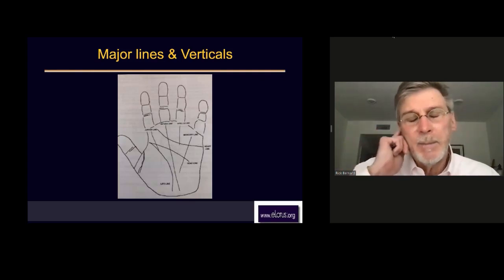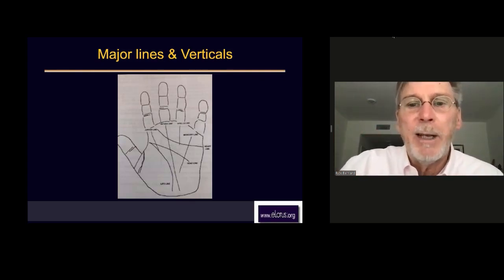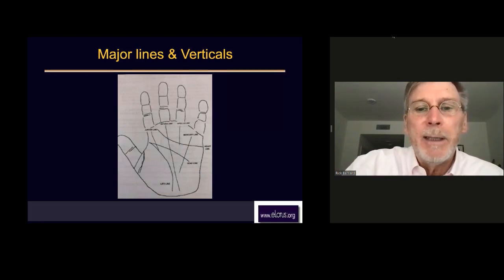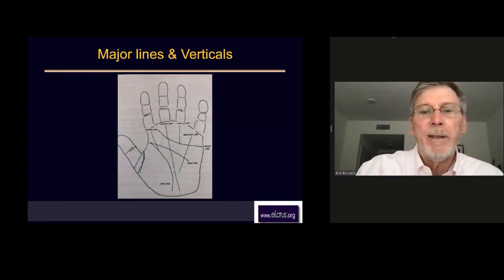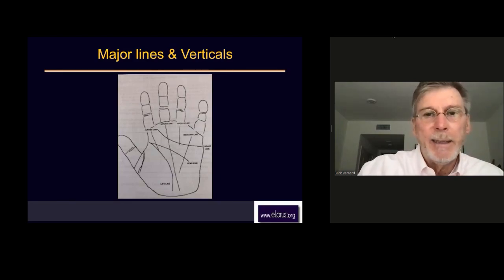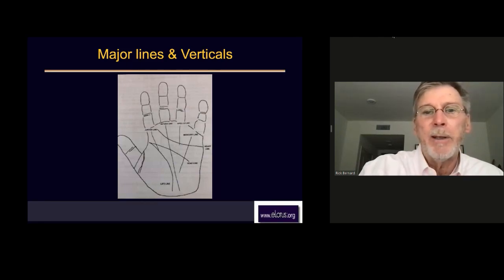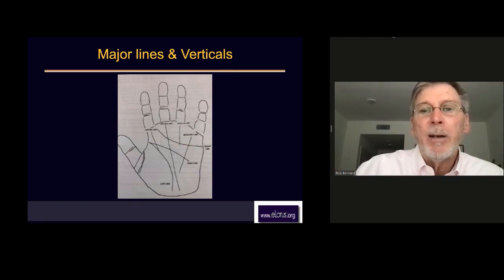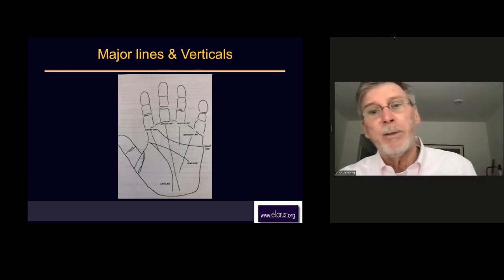This has a lot of the major lines and vertical lines in the hand. The lifeline goes around the thenar eminence, kind of curves around. The headline is a little more horizontal and usually meets the lifeline on the radial edge, just around where the thumb is, between the thumb and the index finger. The heart line starts on the ulnar edge and sweeps towards one of these fingers, usually towards the index finger or the middle finger.